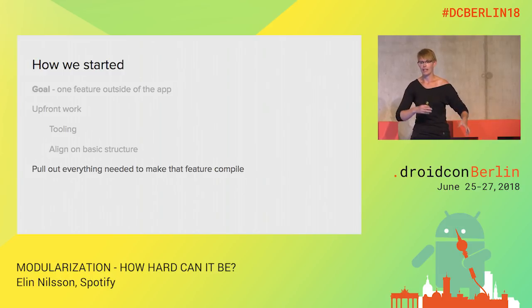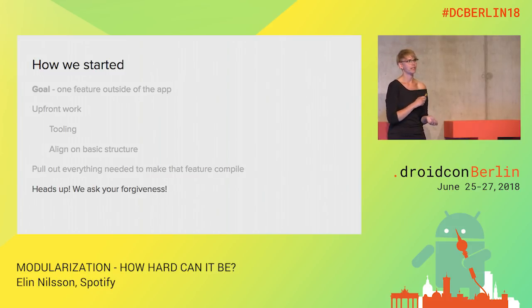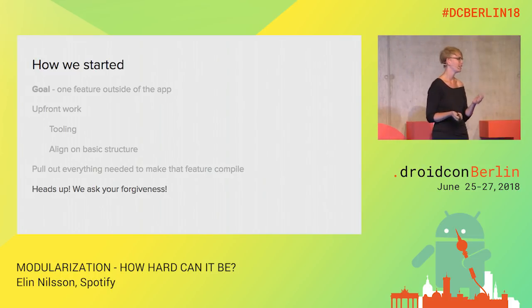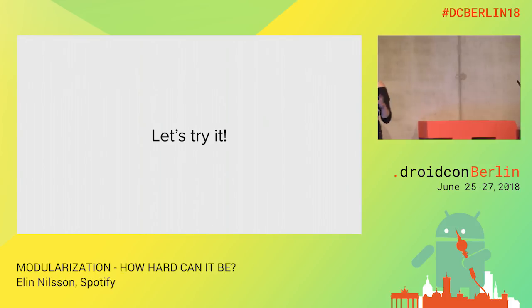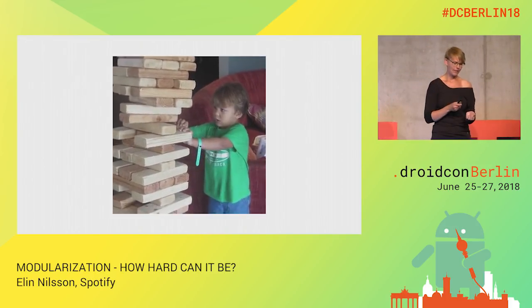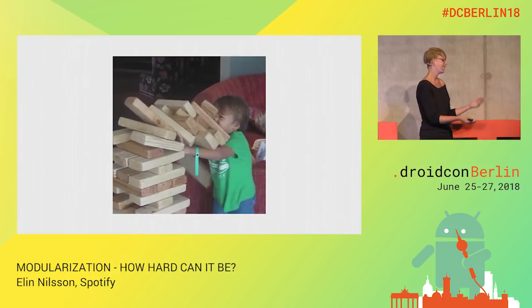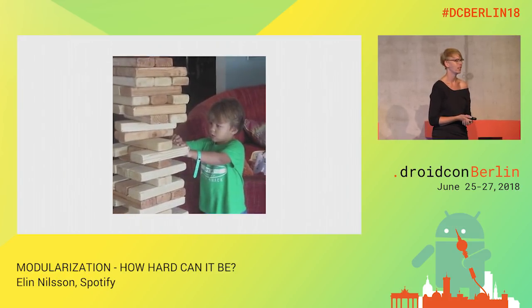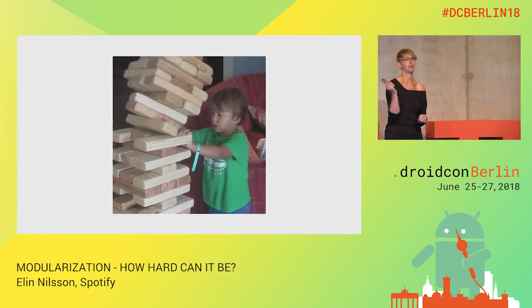With the structure set up, we started pulling out everything needed to make that one feature work. We also sent an email saying we're going to modularize, we'll probably break stuff, we're sorry, and we'll buy you cake if we break master. Pulling stuff out initially doesn't always go well — you move some files, no squiggly lines, but then you try to compile and it's a struggle. After trying again and again, it did compile and we managed to get that first feature out.